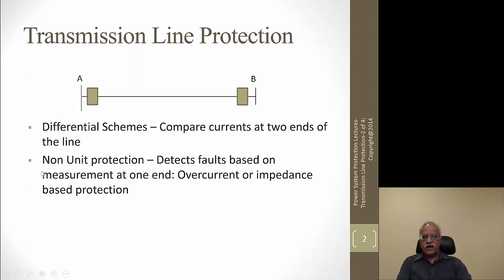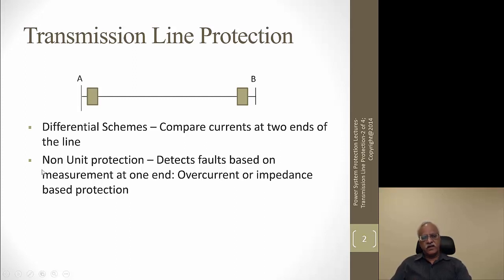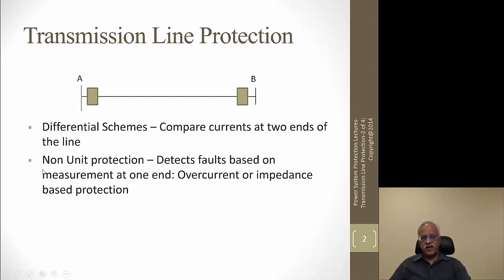Another option is to measure the impedance as seen from line end A or line end B towards the line section. It is a ratio of voltage to current. If a fault occurs, the voltage goes down and current increases, so the impedance measured changes from load impedance to the faulted impedance, which could be just the impedance of the transmission line.